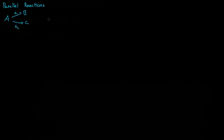If we were to write the reaction rate of B, or the production of B, Rb is equal to K1 times the concentration of A to the power of alpha 1. And the reaction rate of C, or the production of C, is governed by K2 and has the concentration of A to the power of alpha 2.